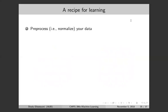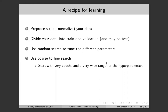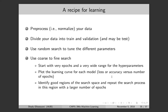Here's a summary for doing the assignment or any neural network project: pre-process and normalize your data, divide into train, validation, and test sets as always, use random search to tune hyperparameters, start with coarse search using very few epochs and a wide range of hyperparameters. Plot the learning curve to see what's happening, identify good regions of the search space, and then repeat with a focused search on those good regions.